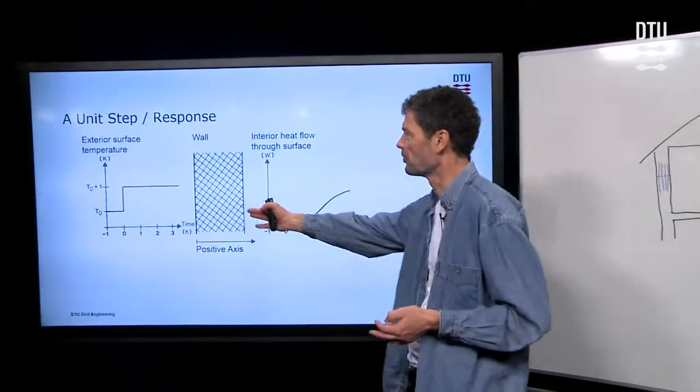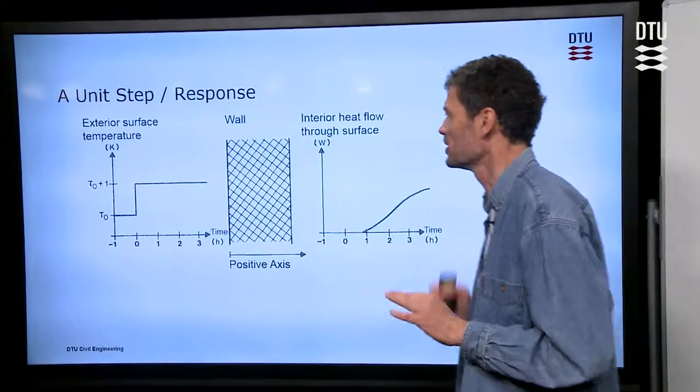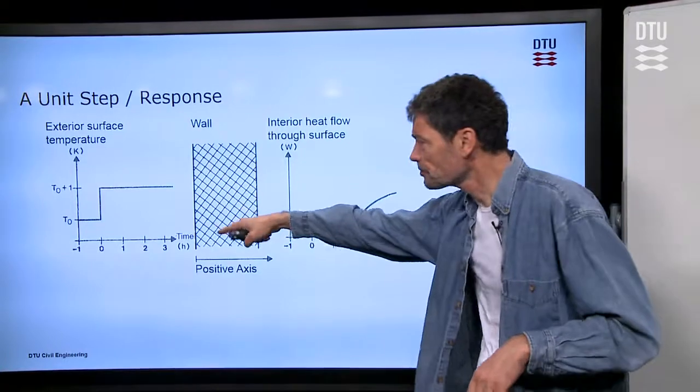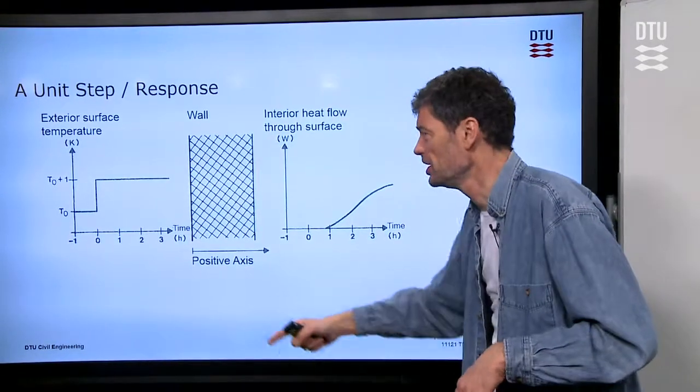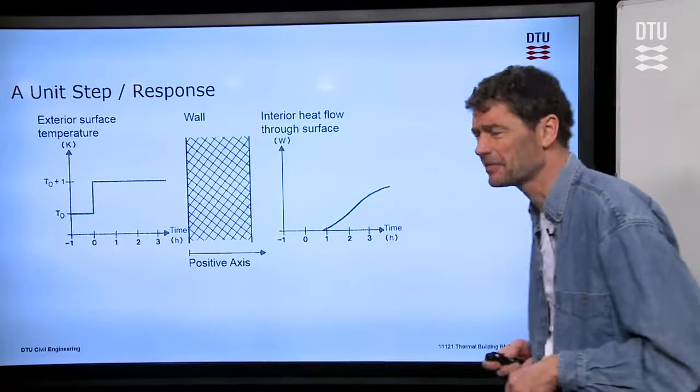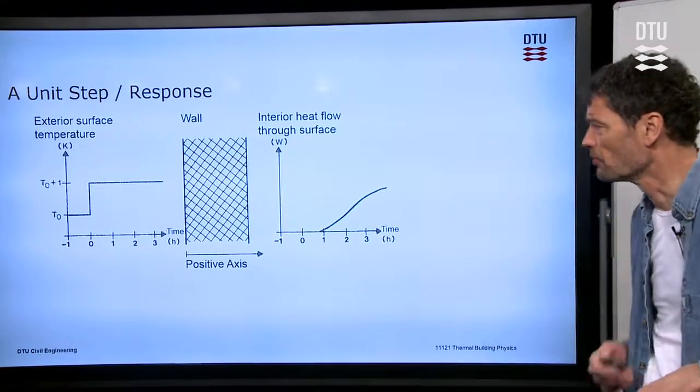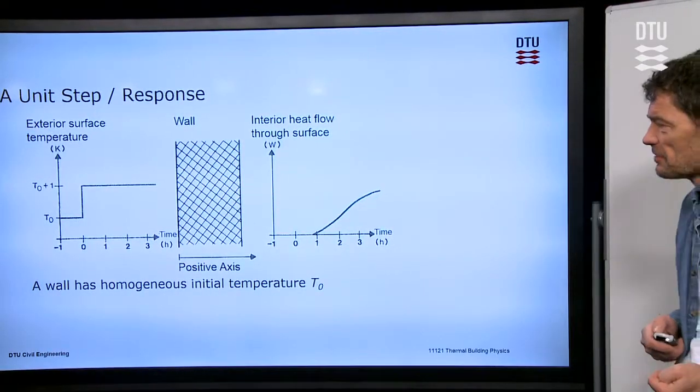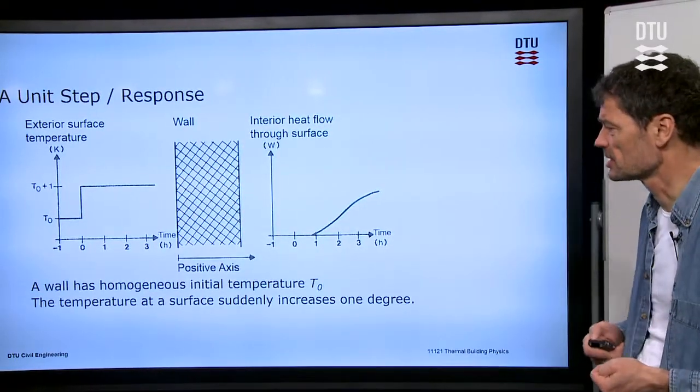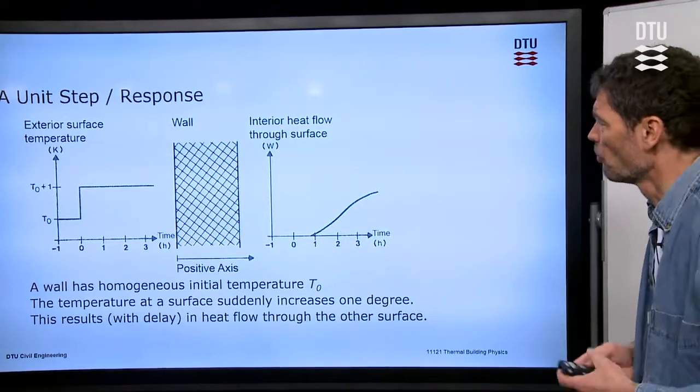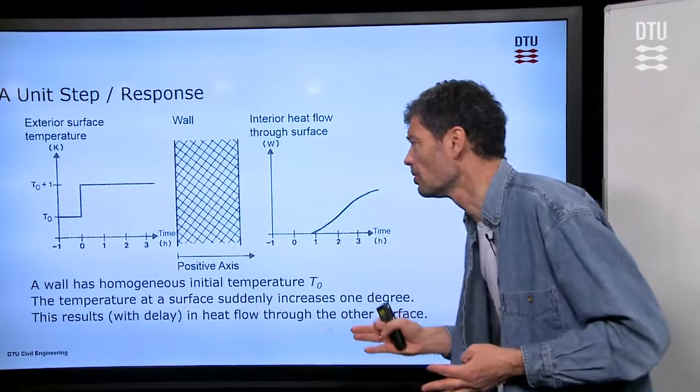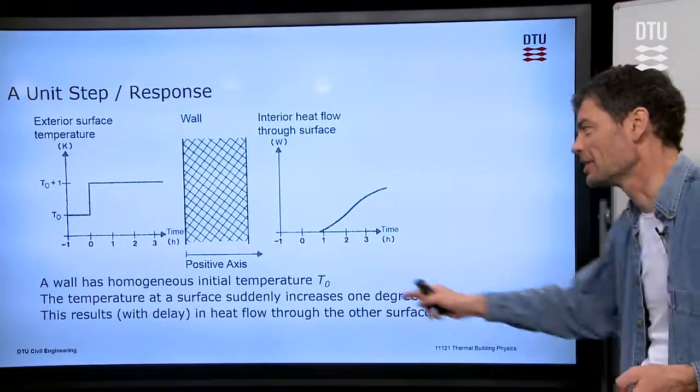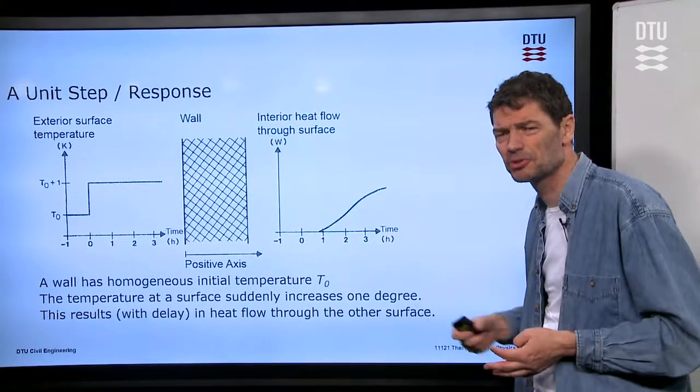So here's my wall from before. And we have a left hand and a right hand side of it, of course. And what we do is that we suppose now, suddenly we have a unit increment of the temperature on the left hand side of the wall. So it starts from an initial temperature, and suddenly this thing happens on the left hand side. So what will then be the result of that? Well, of course, we'll have heat flow into the wall. So we have heat flow coming in, and also heat flow coming out. And we can see here is that there is some time delay for the heat flow to pass through the wall after this unit step of increasing the temperature on the left hand side.